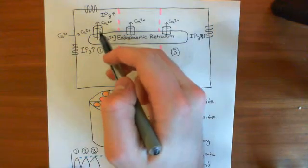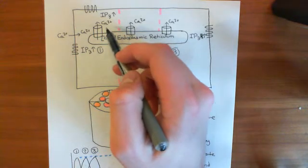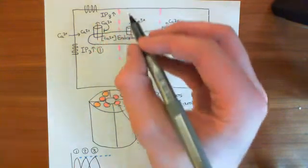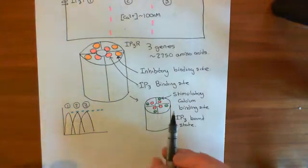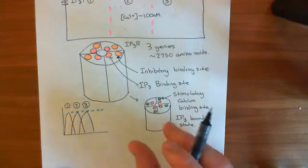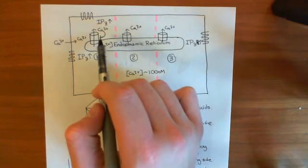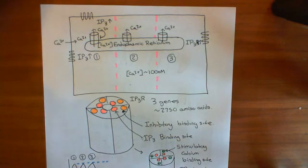What we do know is that calcium inhibits the IP3 receptor. This seems contradictory — I've said calcium activates it — but low levels of calcium stimulate the IP3 receptor by binding to the stimulatory calcium binding sites. However, if the calcium level gets very very high, you get a negative feedback: very high calcium starts inhibiting the IP3 receptors. We'll continue this discussion in the next video.